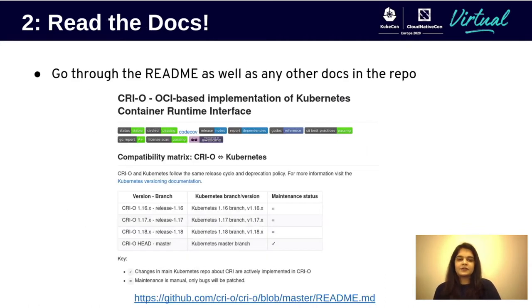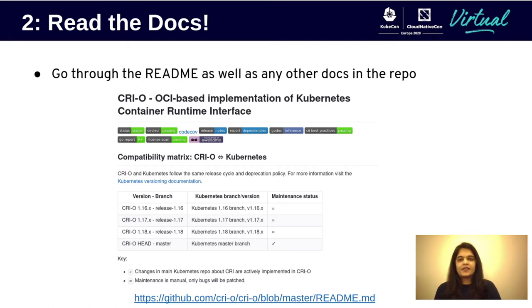Now let's look at the open source process. So now that you have picked a project to work on, the next step is to learn more about it. You should start by always going through the README, as well as any contributing guidelines available. Then you should clone the repository and try playing around with the project in your own environment — change some code around, add some new test cases, don't be afraid to break some things.